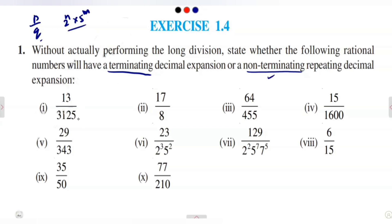So now we are going to check whether each denominator can be written in the form 2^N × 5^M or not. If it can be written in that form, it is a terminating decimal expansion. If not, it is a non-terminating repeating decimal expansion. Let us see the questions one by one.